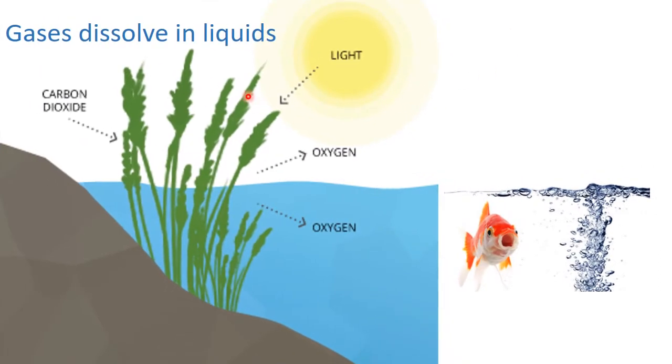Now we are going to talk about gases that dissolve in liquids. Oxygen is a gas that dissolves in liquid. That's why fish can live inside the water. How do we get oxygen in the water?